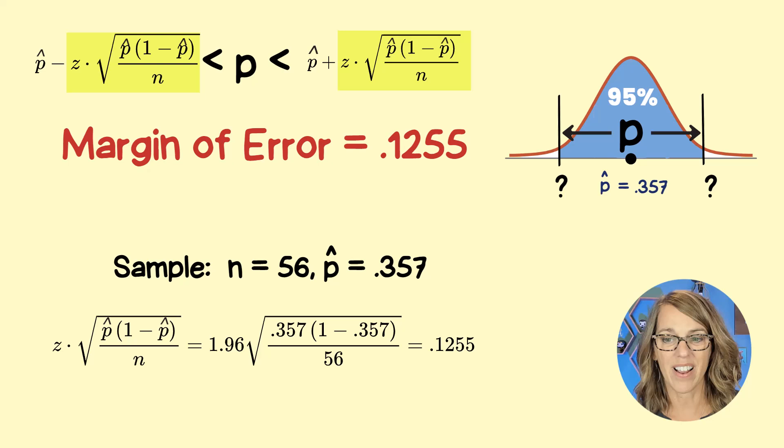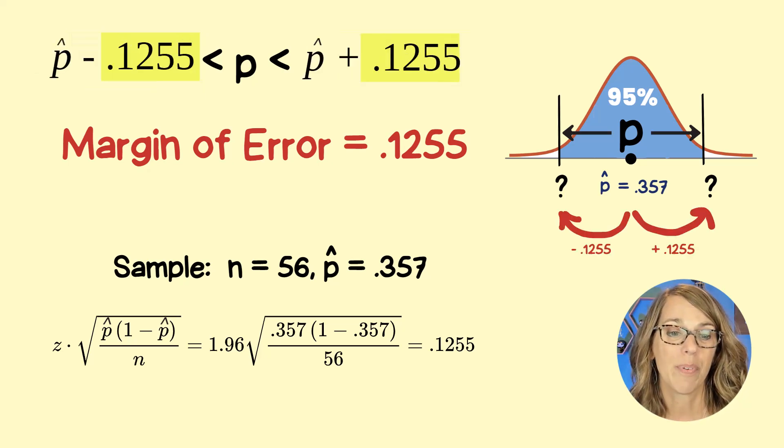So that margin of error again gets me from my sample proportion, my point estimate, to both the lower limit and the upper limit. Let's put that into our formula. So I've got P hat plus and minus 0.1255.